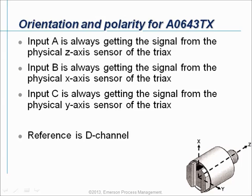So that is your channel A on the data collector. Input B always gets the signal from the physical X axis sensor of the triax — that is always your channel B. And input C always gets the signal from the physical Y axis sensor of the triax — that will be your channel C.